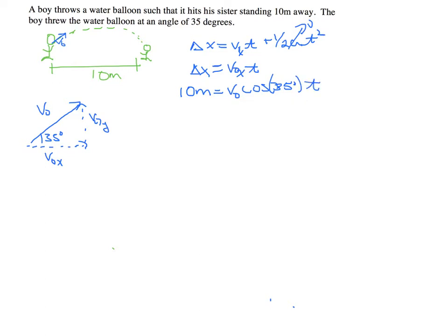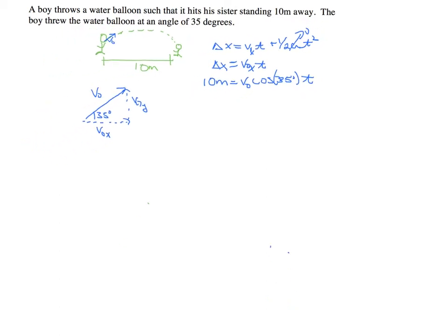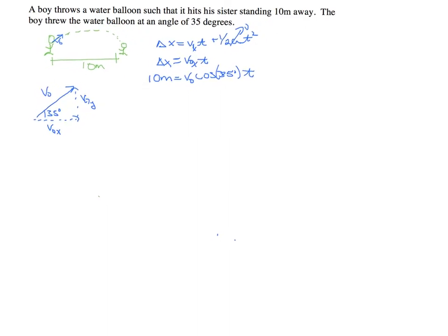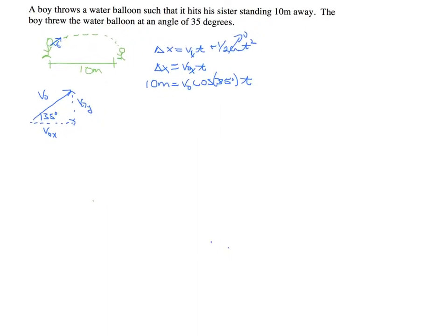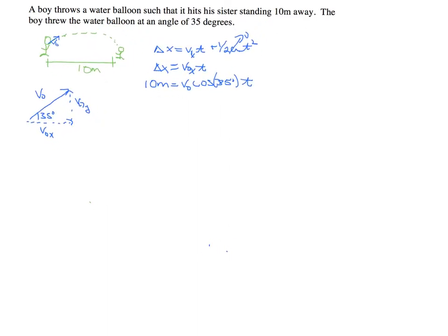I can describe this V0x through V0 cosine of 35 degrees times time. So if I knew V0 I could find the time. If I knew the time I could find V0. Let's think about another kind of expression that we have here.